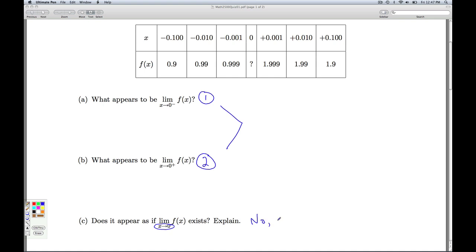So the answer is no, since as x goes to 0 from the left, f(x) appears to go to 1. And as x goes to 0 from the right, f(x) appears to go to 2. But once again, this is based purely on these few data points.